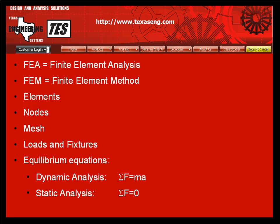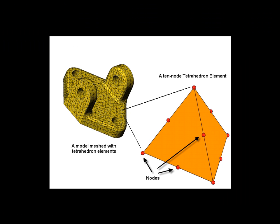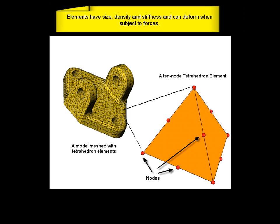A basic concept of FEA is to break up the structure into small chunks or volumes known as finite elements. Here is a structure with a mesh of tetrahedron shaped finite elements inside the volume of the structure. The elements have size, density, and stiffness, and can deform similar to real life when subject to forces.